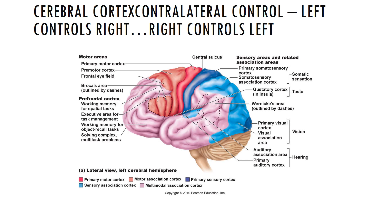The auditory cortex is located within the temporal lobe. The primary auditory cortex receives sound information from the ear, such as pitch, rhythm, and volume. The auditory association area integrates and analyzes the information from the primary auditory cortex and uses past experiences to interpret what the sound stimulus is or means.